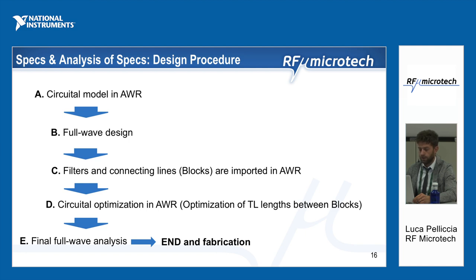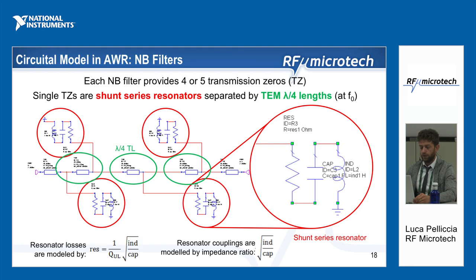Then of course we carried out fabrication and validation of the device. Let me start with the circuital model in AWR. Here you can see an example of the notch band filter — in particular, this is the case of a fourth order notch band filter where the resonator is modeled as a shunt series resonator with a resistor, capacitor, and inductor.